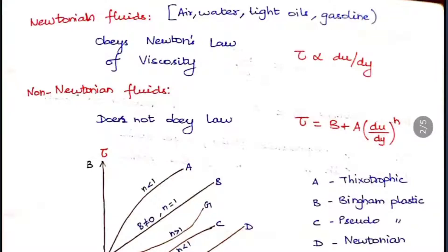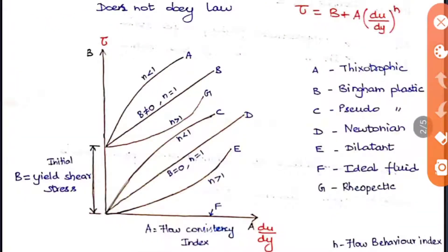For non-Newtonian fluids, the equation is: tau = b + a(du/dy)^n. Here, b is the yield shear stress (plotted on the y-axis as tau), a is the flow consistency index, and n is the flow behavior index. The x-axis of the graph is du/dy and the y-axis is tau.